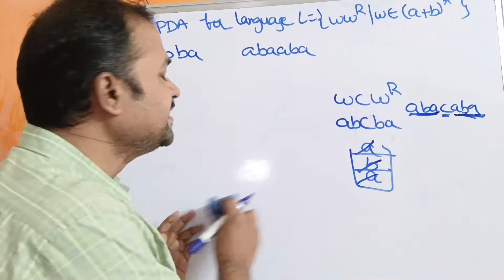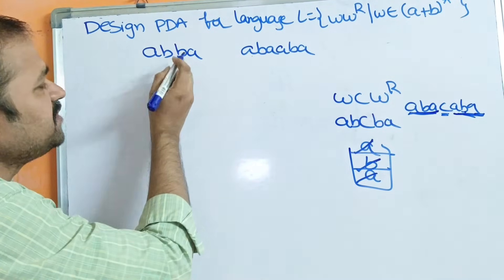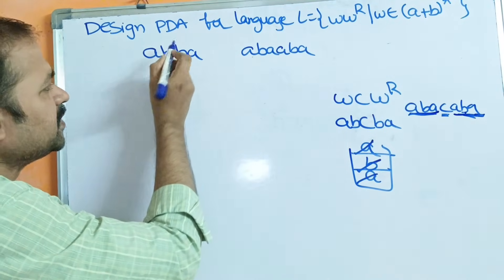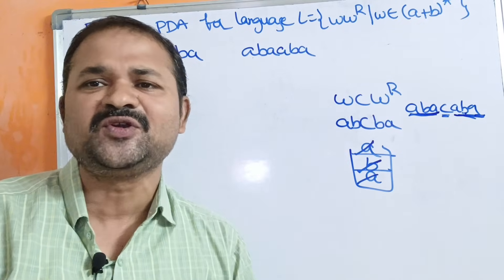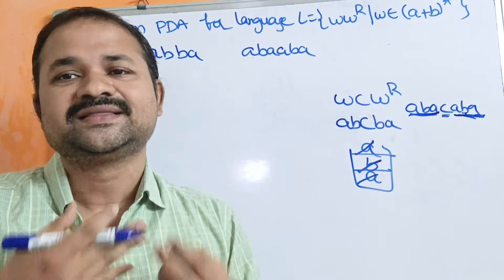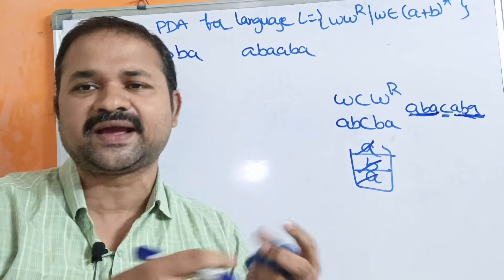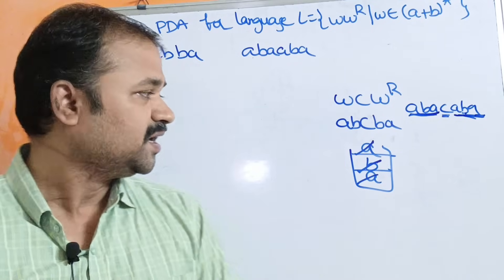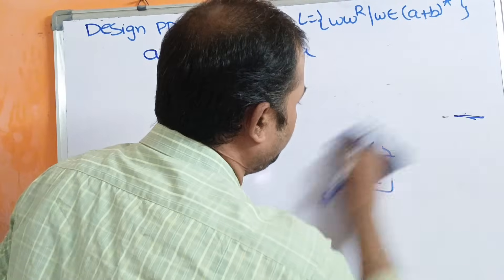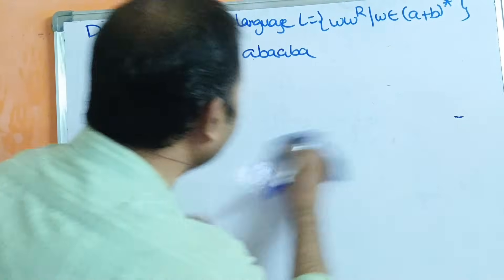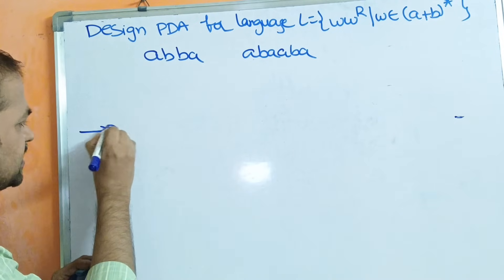Whereas for WW^R, the problem is that the center is not given. The center is not given here, so that is the problem. It is impossible to find the center of the string directly. For that purpose we have to make two moves. So let us start designing the PDA, assuming initially we are at state Q0.